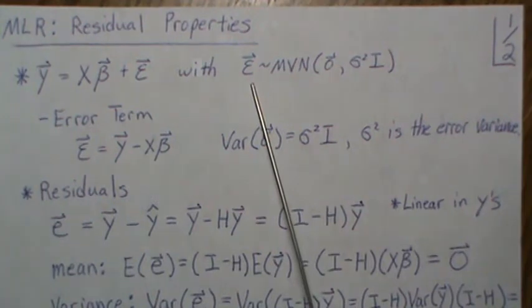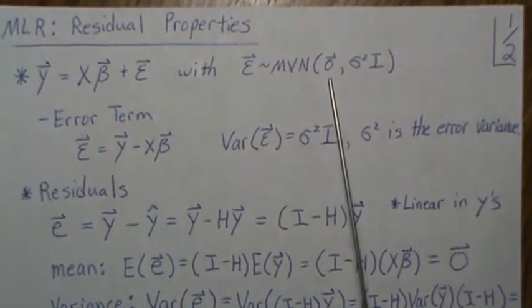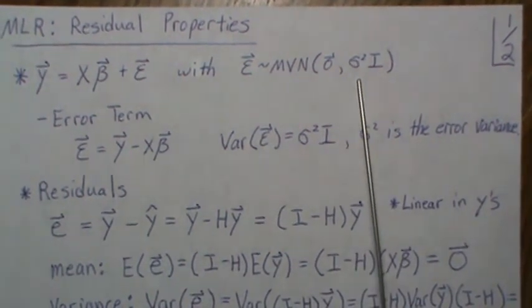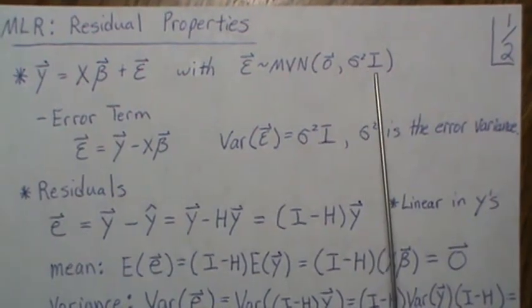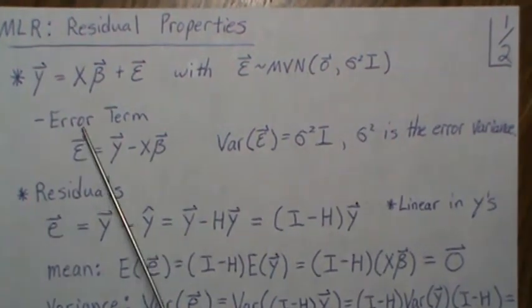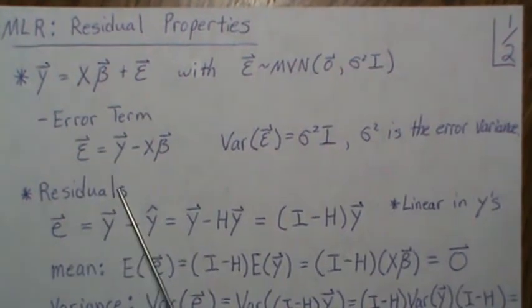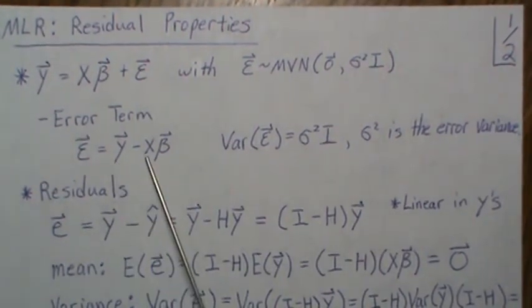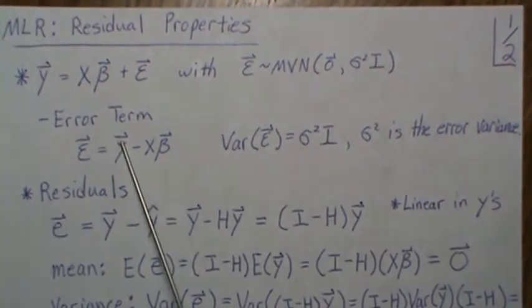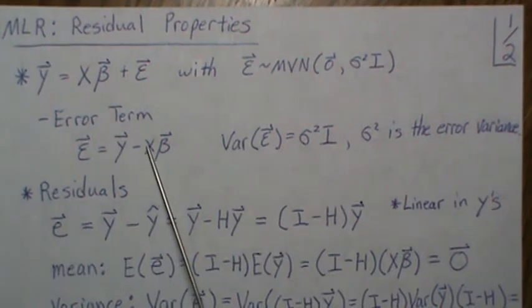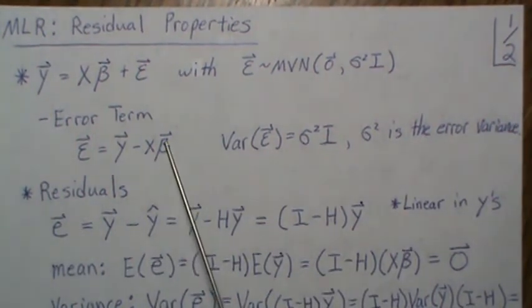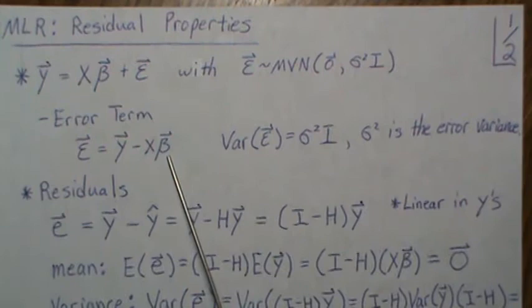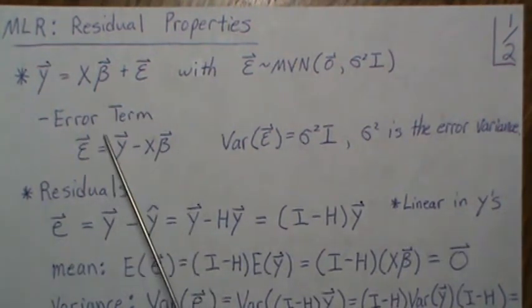We're assuming that the error term follows a multivariate normal with mean zero and covariance matrix sigma squared I. Now note this is the error term, so if we subtract that over we have y minus X beta. We know the y's, we know the x's, but we don't know the unknown beta parameters, so we'll never truly know what the error term is.